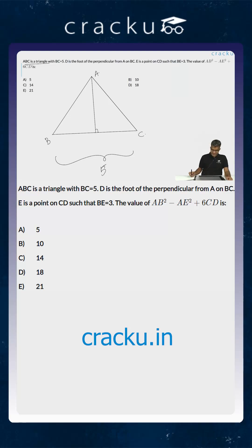E is a point on CD such that BE is 3 centimeters. So let us assume that this is E. BE is 3. So if you assume that BD is P, what is the value of DE? DE will be 3 minus P, because BE is equal to 3.